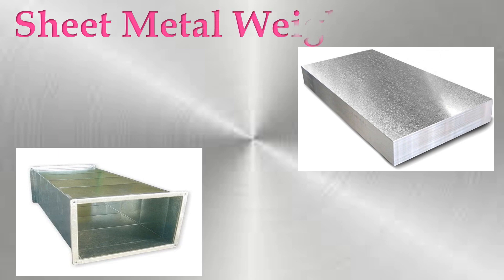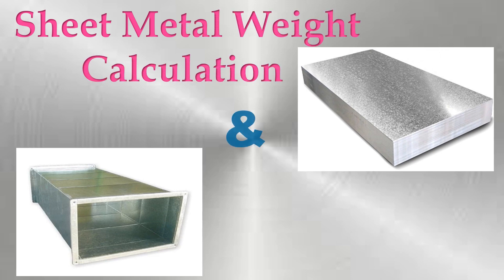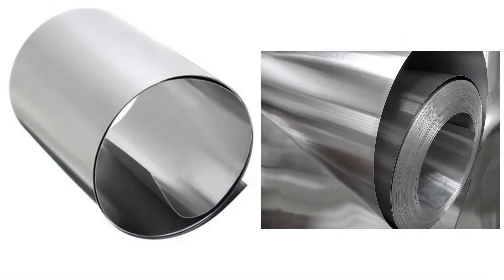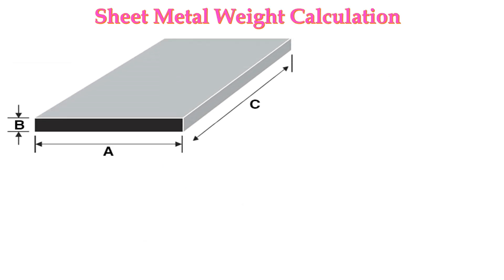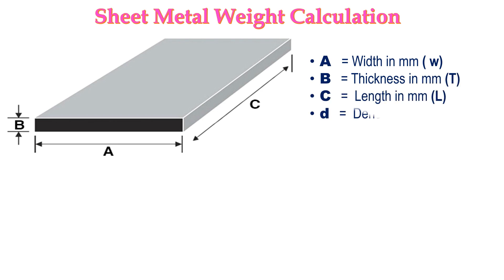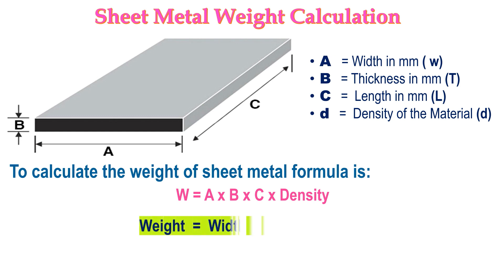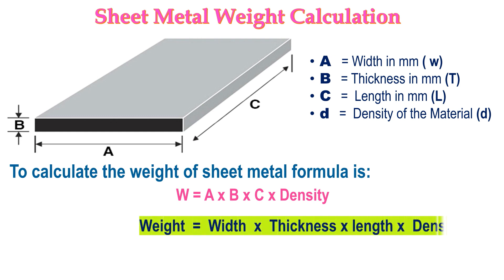This video is about understanding and calculating sheet metal weight and duct weight. Here are the formulas for calculating sheet metal weight in both imperial units and SI units. Weight equals width multiplied by thickness, multiplied by length, and multiplied by density.